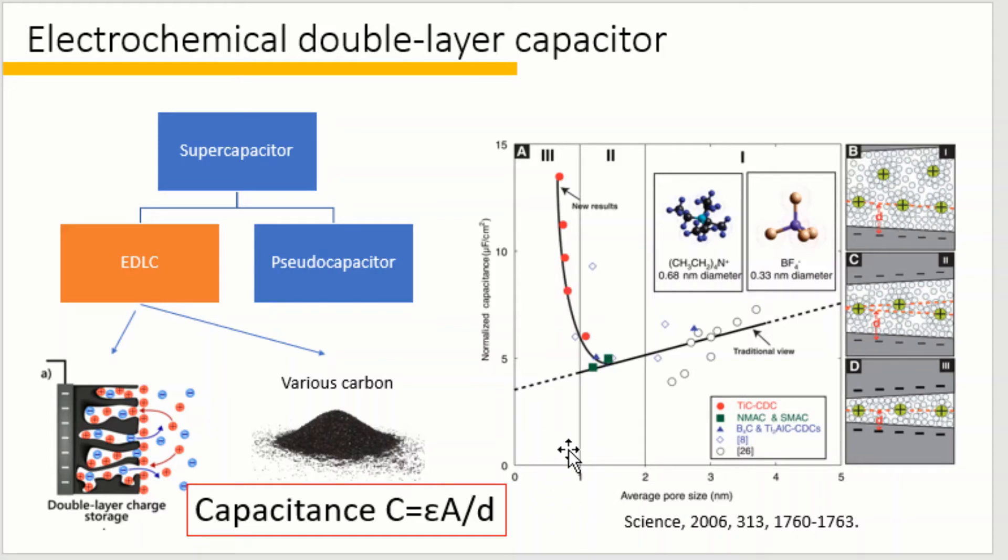That is because smaller pore size removes the solvation shell of the ions, reduces the effective ion size, and then increases the number of ions that can be absorbed per surface area. So the normalized capacitance per surface area or the number of ions absorbed per surface area increases in the narrow pores when the pore size is smaller than the size of the solvated ions.